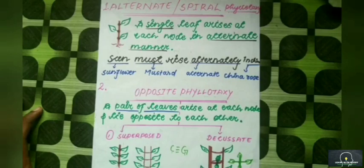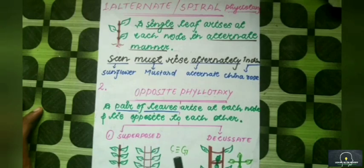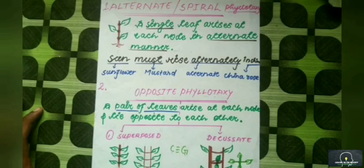Now let's learn opposite phyllotaxy. In opposite phyllotaxy, a pair of leaves arise at a node and lie opposite to each other. That means two leaves arise from one node and both are opposite to each other.